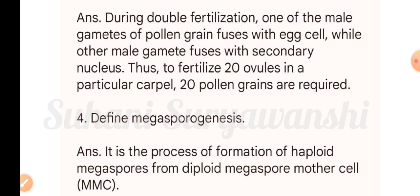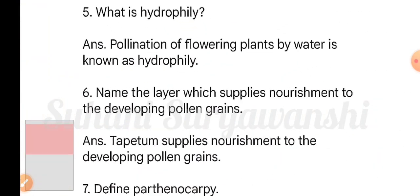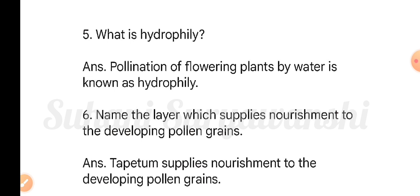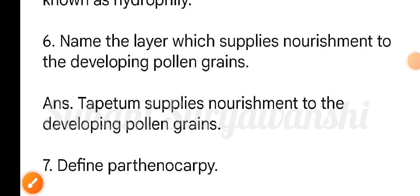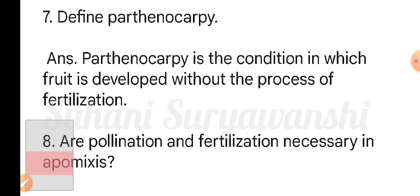Question four: define megasporogenesis. It is the process of formation of haploid megaspores from a diploid megaspore mother cell. Question five: what is hydrophily? Pollination of flowering plants by water is known as hydrophily. Question six: name the layer which supplies nourishment to the developing pollen grains. The answer is the tapetum, which is the layer of the anther that supplies nourishment to the developing pollen grains.